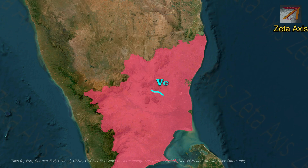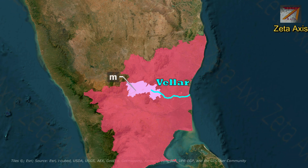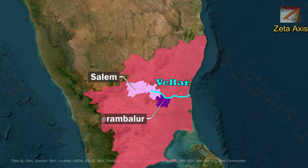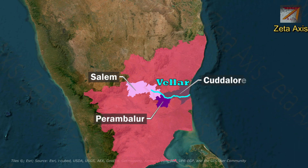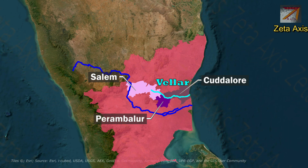The next important river is the Velar river. It originates in Salem district and flows through Perambalur district, finally meeting the Bay of Bengal in Cuddalore district of Tamil Nadu. The Velar river flows into the Bay of Bengal just north of the Kaveri river.